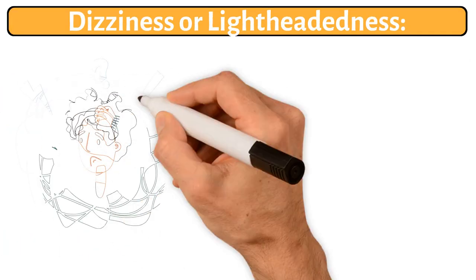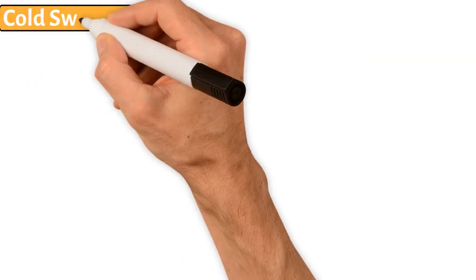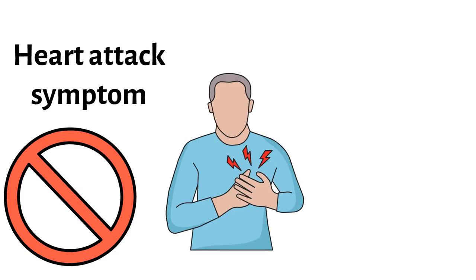11. Dizziness or lightheadedness. These can be signs of many conditions, including heart issues. 12. Cold sweat. Breaking out in a cold sweat for no apparent reason could be a heart attack symptom.